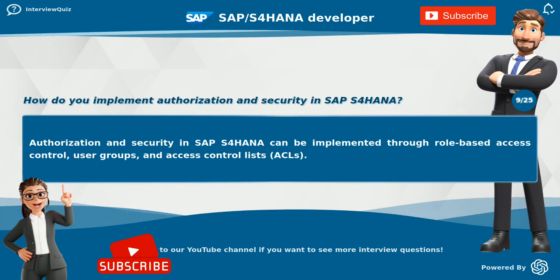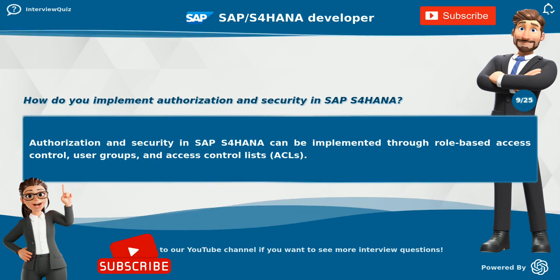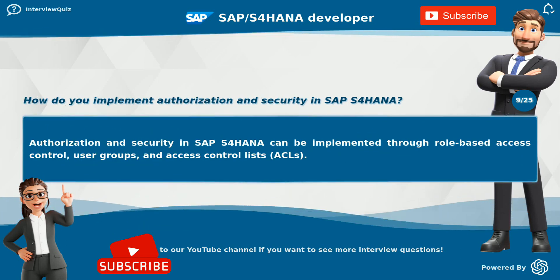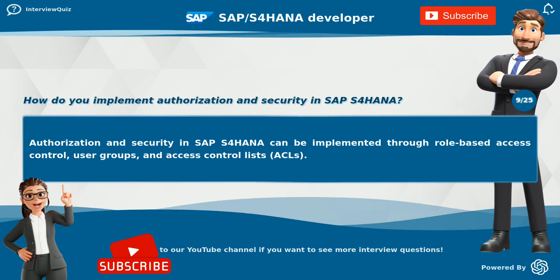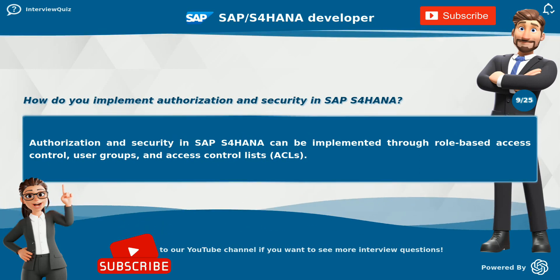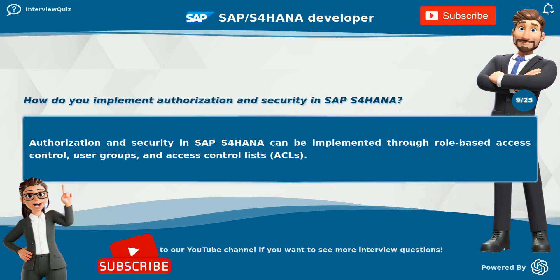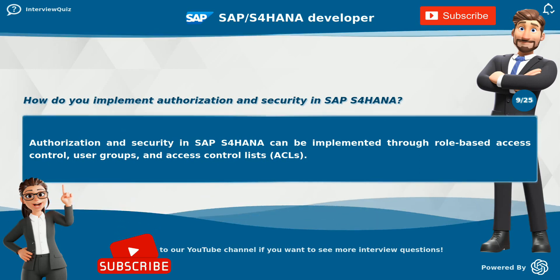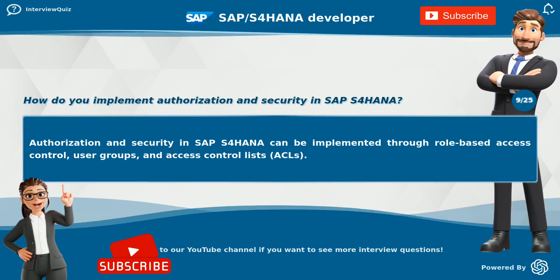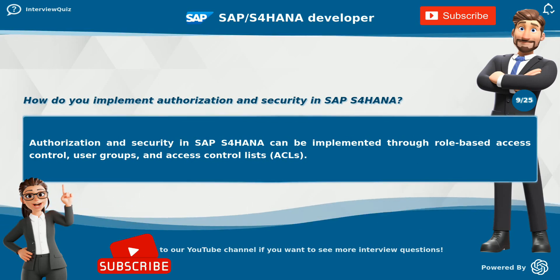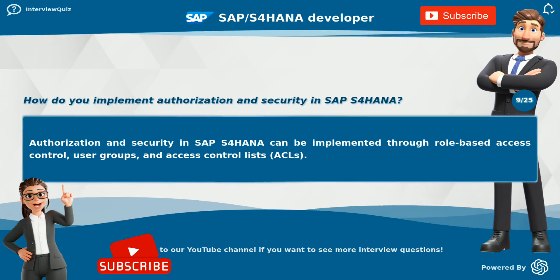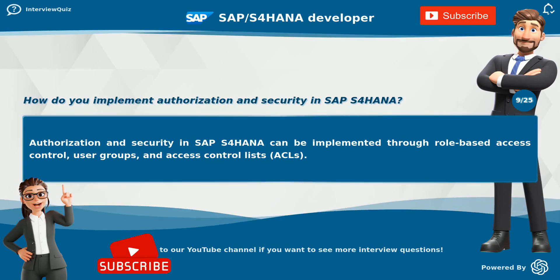How do you implement authorization and security in SAP S4 HANA? Authorization and security in SAP S4 HANA can be implemented through role-based access control, user groups, and access control lists (ACLs).